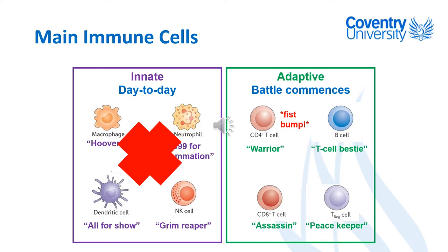Cytokines are those specific chemicals produced by cells of the immune system. Your T helper cells — these warrior cells — produce lots and lots of cytokines, which then activate the B cells and tell them to start producing antibodies. T helper cells and B cells are basically best friends — they can join together by proteins on their cell surfaces, almost like a little fist bump.